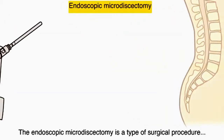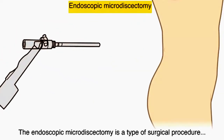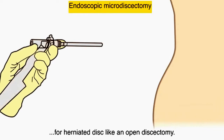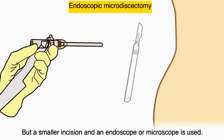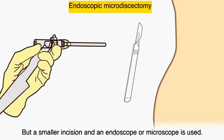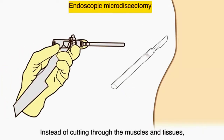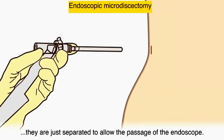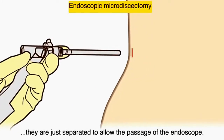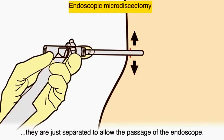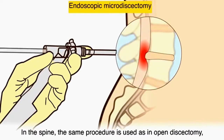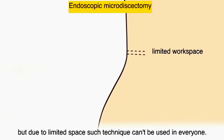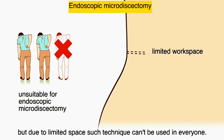Endoscopic microdiscectomy is a type of surgical procedure for a herniated disc, similar to open discectomy, but a smaller incision and an endoscope or microscope is used. Instead of cutting through the muscles and tissues, they are just separated to allow passage of the endoscope. In the spine, the same procedure is used as in open discectomy, but due to limited space, such technique can't be used in everyone.